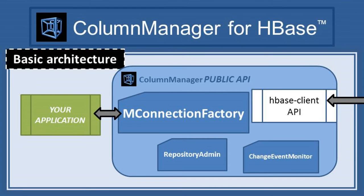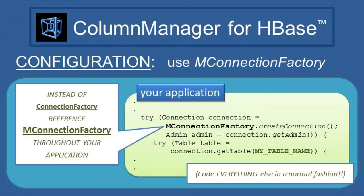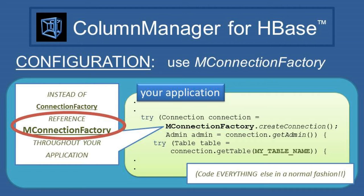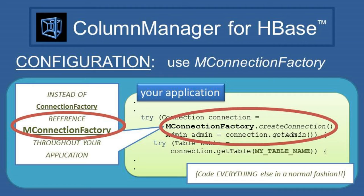Now let's just dive straight in and look at Column Manager's physical architecture. Among Column Manager's few public components, the one class most likely to be referenced in your end-user application code is mConnectionFactory. As was explained in the Install and Configure video, as well as in the Java docs, when you want to Column Manager enable an end-user application, you simply replace any reference to the standard HBase client CONNECTION FACTORY with a reference to Column Manager's mConnectionFactory. Subsequent to the invocation of mConnectionFactory's CREATE CONNECTION method, your application goes about its normal usage of the HBase client API.